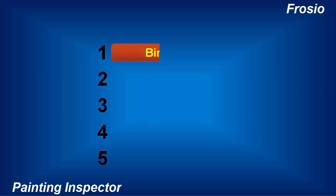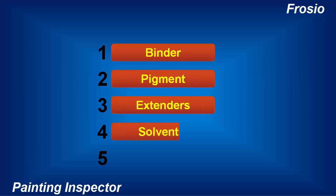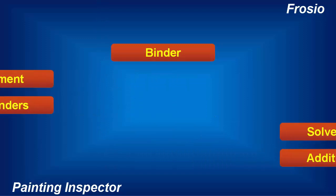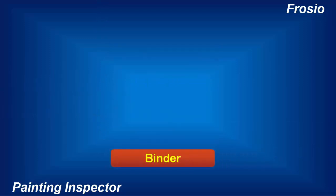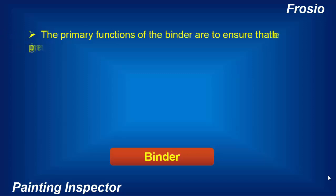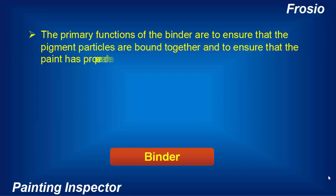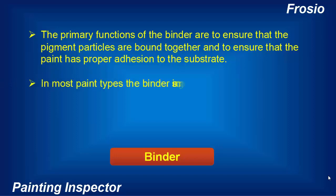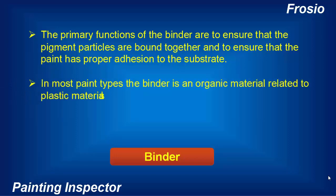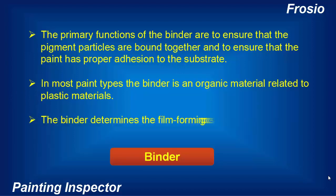The main components of paint are binders, pigments, extenders, and often solvents and various additives. The primary functions of the binder are to ensure that the pigment particles are bound together and to ensure that the paint has proper adhesion to the substrate. In most paint types the binder is an organic material related to plastic materials. The binder determines the film-forming process of the paint.